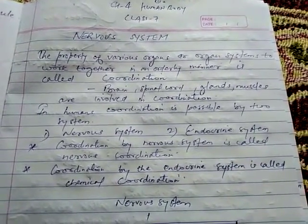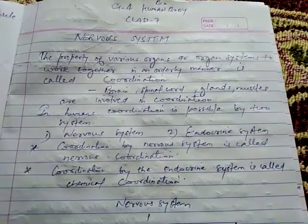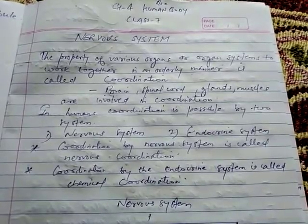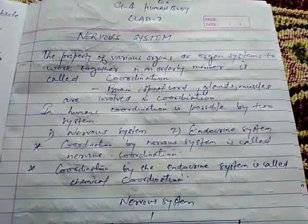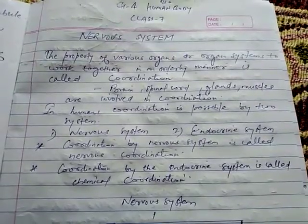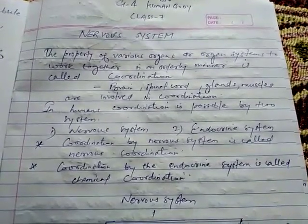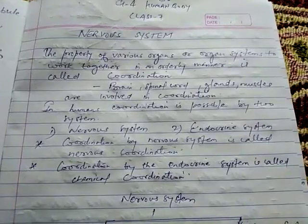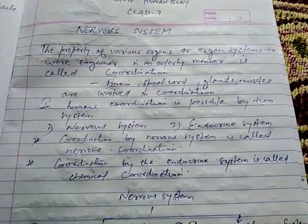In humans, brain, spinal cord, glands, muscles and other parts are involved in the process of coordination. Coordination is possible by two systems: one is the nervous system and the other is the endocrine system.